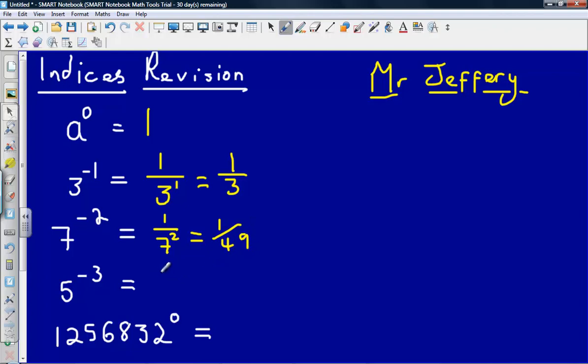Next one, again same thing, take the reciprocal and then it becomes a positive power, so it's one over five cubed, and so we could say that is one over five cubed, which is one hundred and twenty-five.